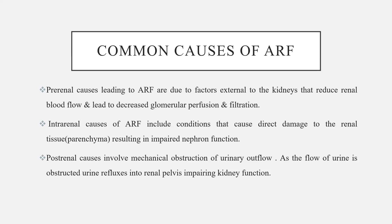The common causes of acute renal failure are pre-renal causes, which lead to renal failure due to factors external to the kidneys that reduce renal blood flow and lead to decreased GFR or glomerular perfusion and filtration. Intrarenal causes include conditions that cause direct damage to the renal tissue resulting in impaired nephron function. Post-renal causes involve mechanical obstruction of urinary outflow; as the flow of urine is obstructed, urine refluxes into the renal pelvis, impairing kidney function.